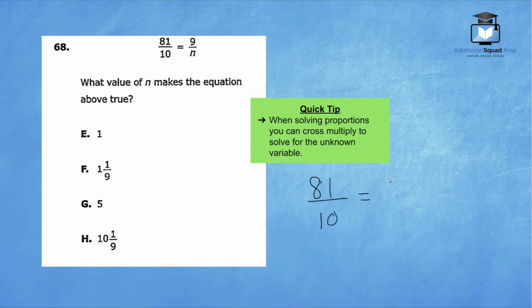81 over 10 equals 9 over n. We'll go ahead and cross multiply here. We have 81n equals 90. Our final step is to divide both sides by 81.